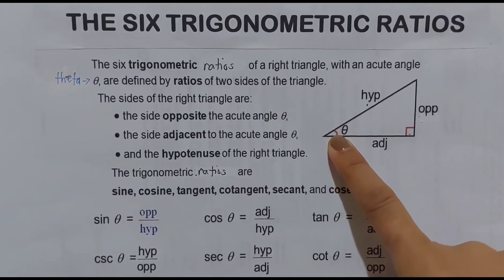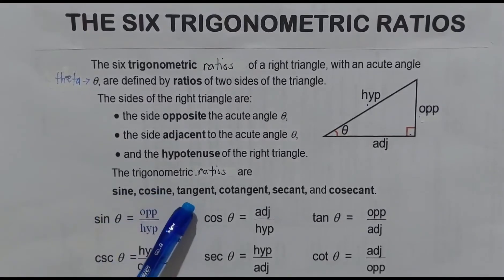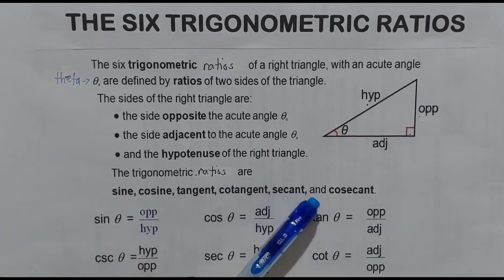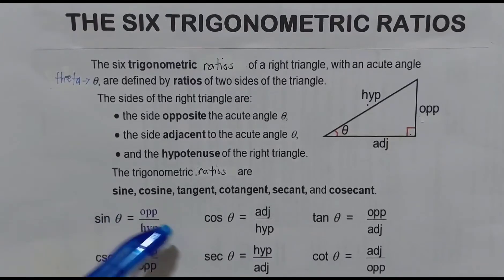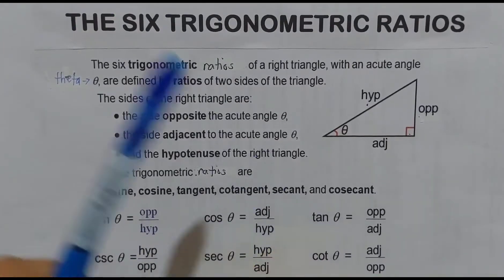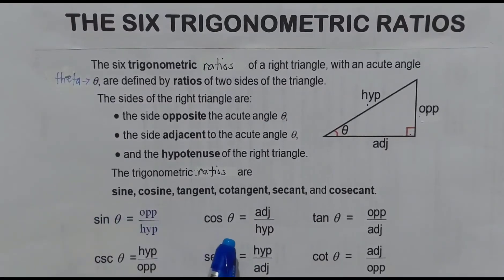The trigonometric ratios are sine, cosine, tangent, cotangent, secant, and cosecant — there are 6. Let us start with the first three basic ones: sine theta, cosine theta, and tangent theta. The other three are simply the reciprocals of these first three ratios.